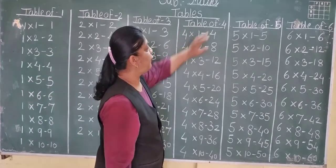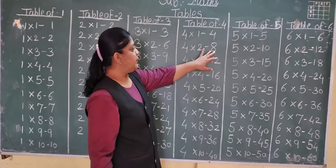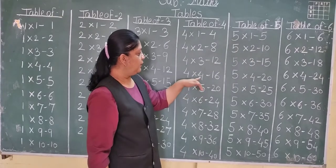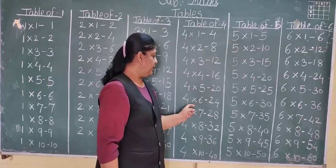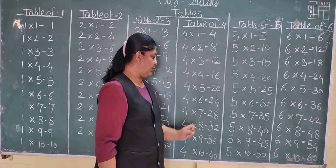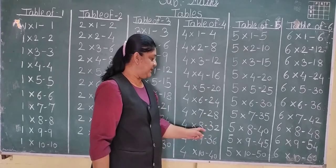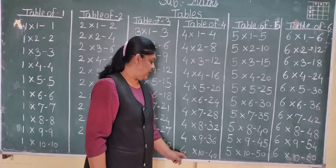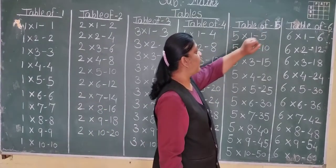Now table of 4: 4 ones are 4, 4 twos are 8, 4 threes are 5, 4 fours are 16, 4 fives are 20, 4 sixes are 24, 4 sevens are 28, 4 eights are 32, 4 nines are 36, 4 tens are 40.